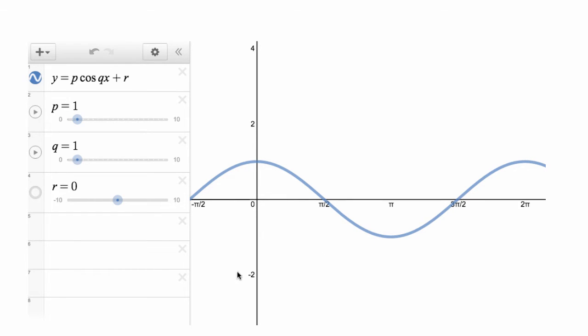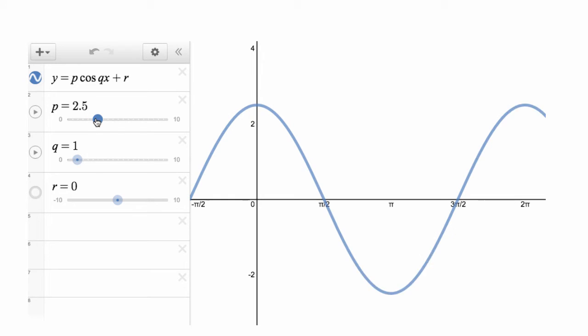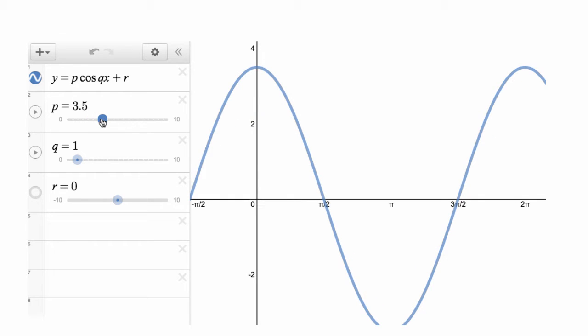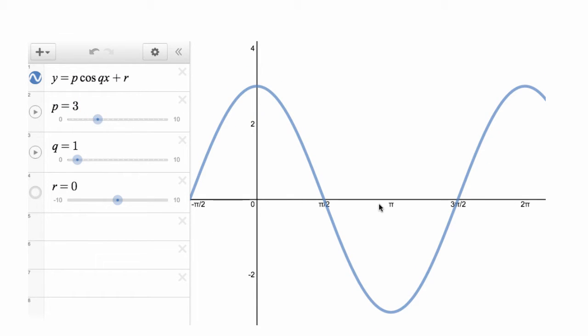So that's the cosine of X. Now let's see what happens when we adjust this number at the front of cosine. We have it as 1 cos X. Let's increase it. You can see that the amplitude of the graph has increased.